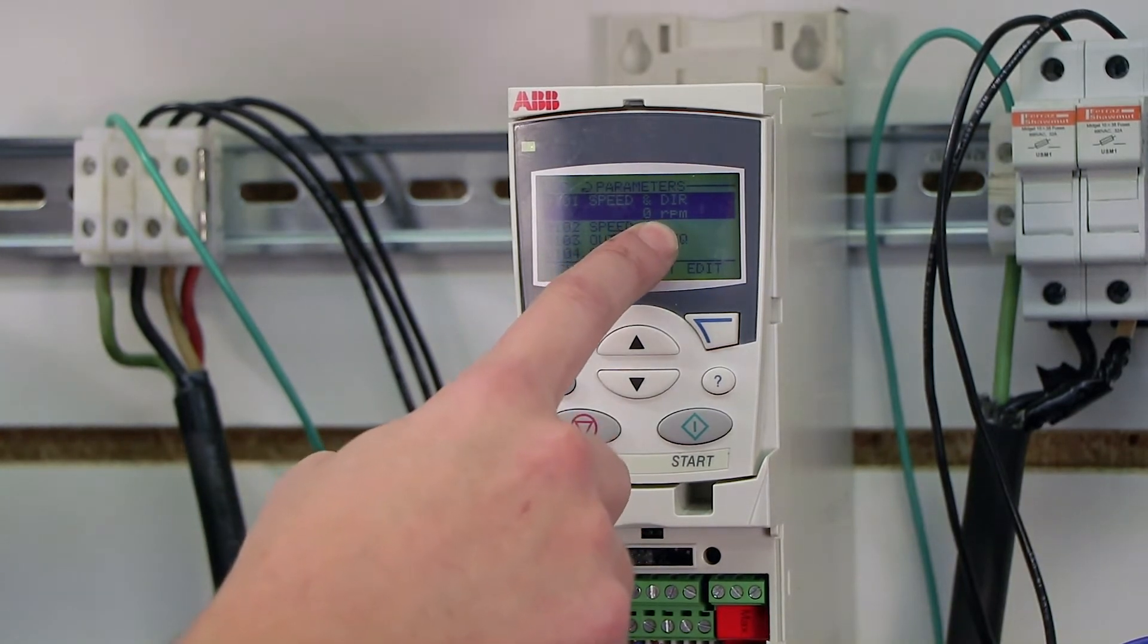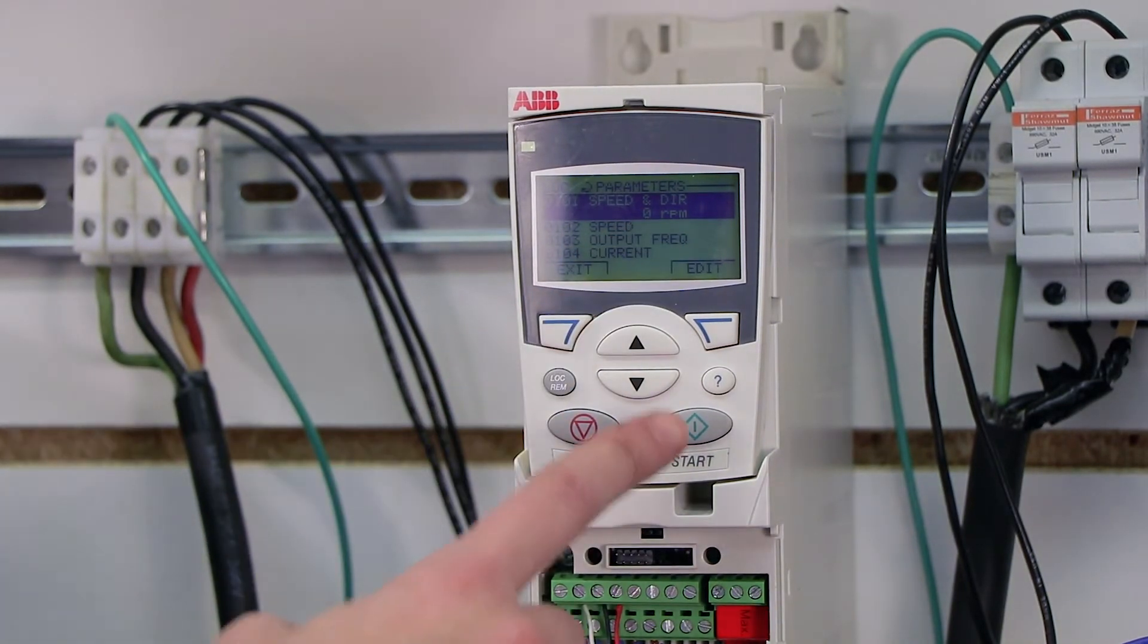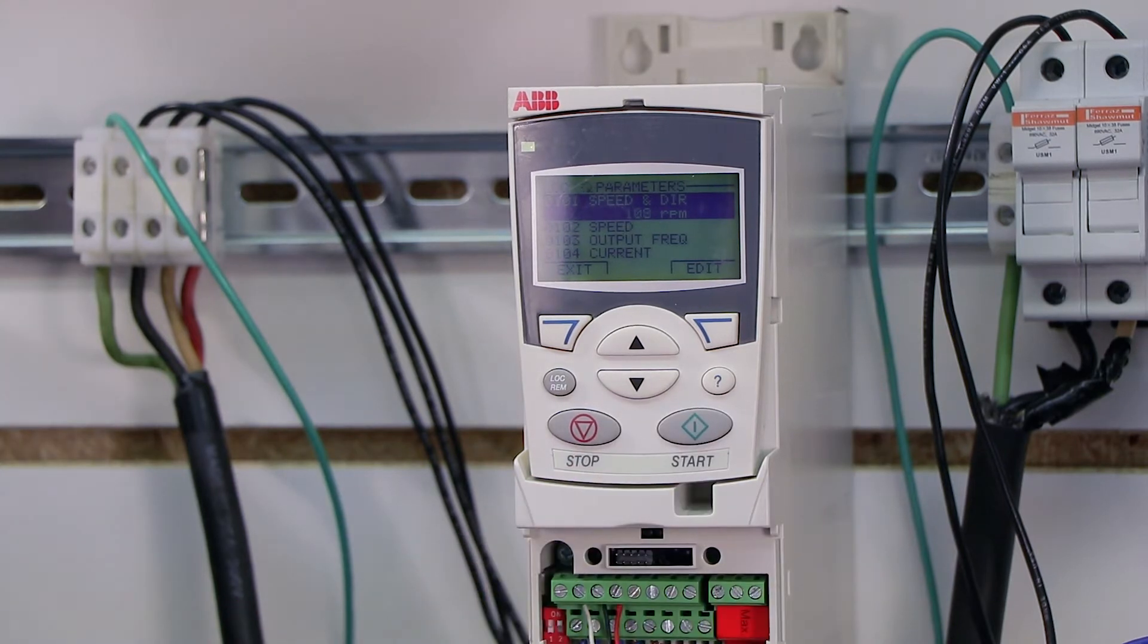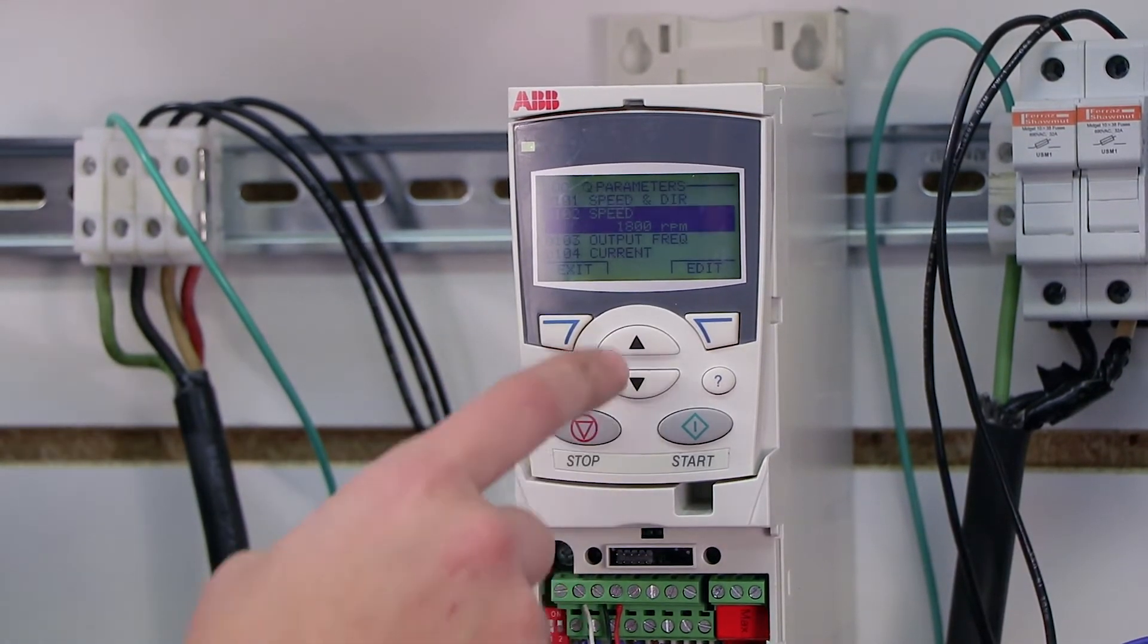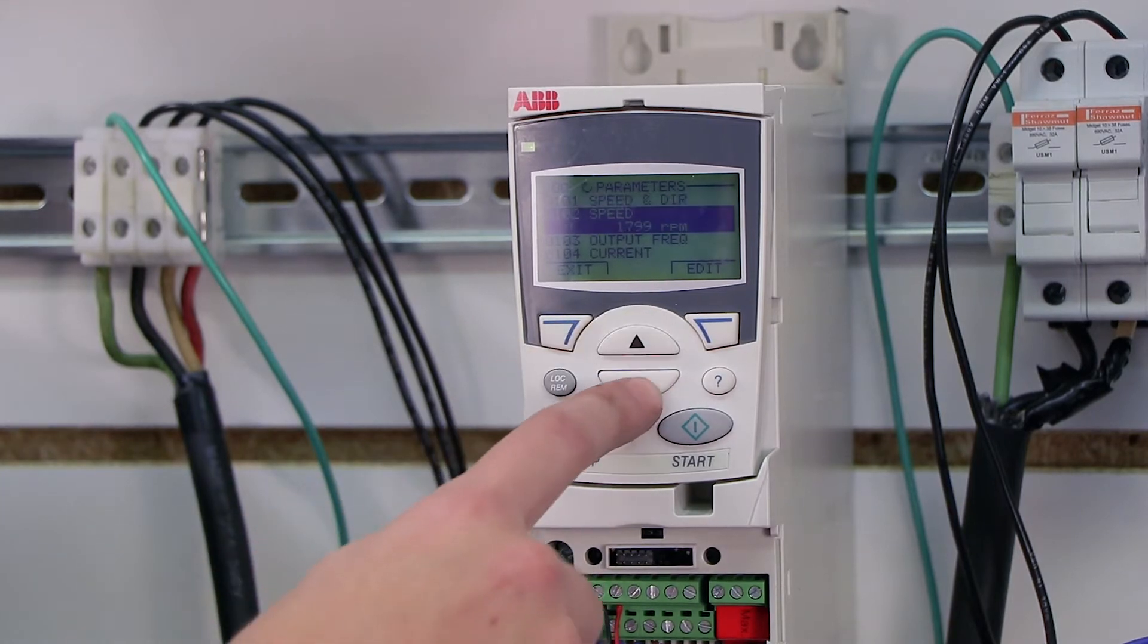Right now, it says speed and direction is 0 RPM. That's because my motor's not running. If I press start, you'll see that number gradually increase to the actual speed the motor is running. Right now, it's running 1800 RPM. Now if I scroll down through these, I can monitor them in real time.